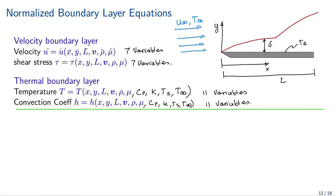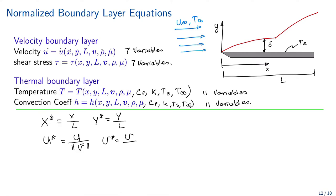To summarize the dimensionless variables: X-star is defined as X divided by L the total length; Y-star is Y divided by L; the dimensionless velocity U-star is U divided by the magnitude of V; and V-star is V divided by the magnitude of V.